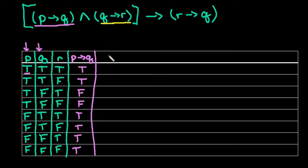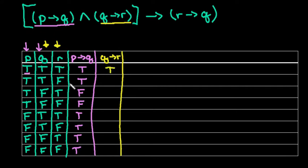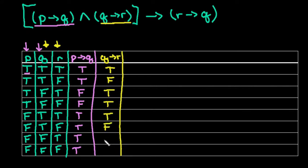Our next column is Q then R. We look at the Q column followed by the R column. True-true is true, true-false is false — that's the only time it's false. False-true is true, false-false is true. Then true-true is true, true-false is false, false-true is true, and false-false is true.